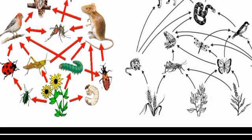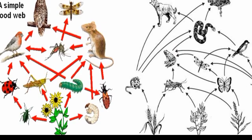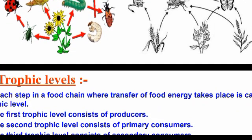For example, there is a plant, grass, a bird, a butterfly, a grasshopper, a frog, a bird, a snake — all interconnected. This is a number of food chains interconnected to produce a food web.